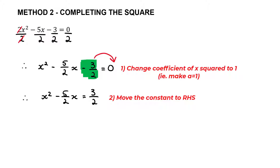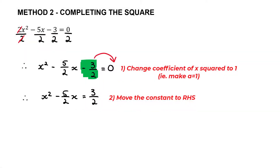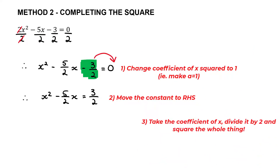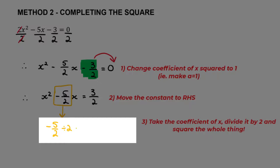Step three is to figure out what number we need to add to the left-hand side to make it a perfect square. To find that number, take the coefficient of x — the b value — and divide it by 2. So (−5/2) ÷ 2 gives us −5/4. Then square it: (−5/4)² = 25/16. That is the number we need to add to complete the square on the left-hand side.